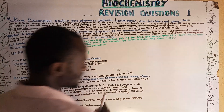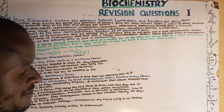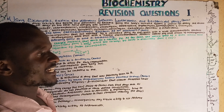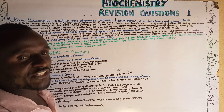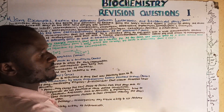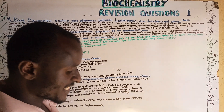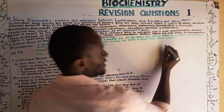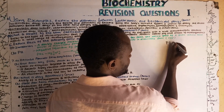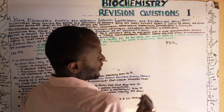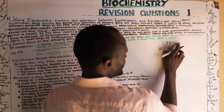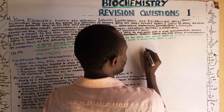Pyruvate decarboxylation is carried out by a tri-enzyme found in the matrix of the mitochondrion known as pyruvate dehydrogenase complex, sometimes denoted as PDHC. It is a tri-enzyme complex.